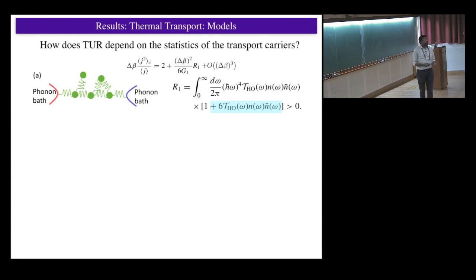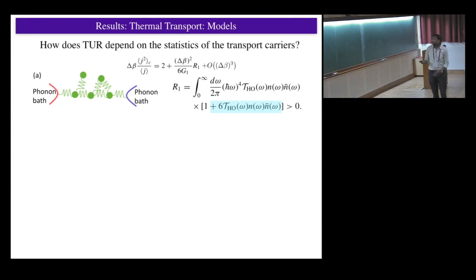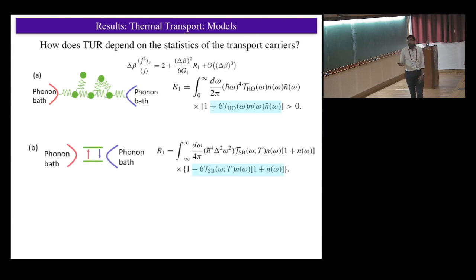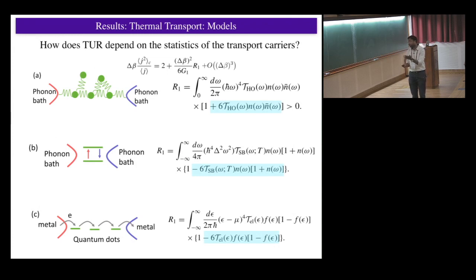We also asked how does this uncertainty relation depend on the statistics of the particles or carriers for transport. If carriers are electrons or phonons, how does the TUR depend? What we found is if you have a chain of harmonic oscillators coupled to phonon baths, you can find this coefficient exactly, which Abhishek has done the calculation for generating function. If you find this R1, you can show this is always positive, no matter whether dynamics is Markovian or non-Markovian. On the other hand, if you take a hybrid system - let's say a single spin coupled to two bosonic baths - you see sign differences arising because of Fermi and Bose statistics and you start seeing violations. Similarly for electron transport, energy transport by electrons also, you start seeing violations. So depending on carriers also, the relation may or may not be satisfied.